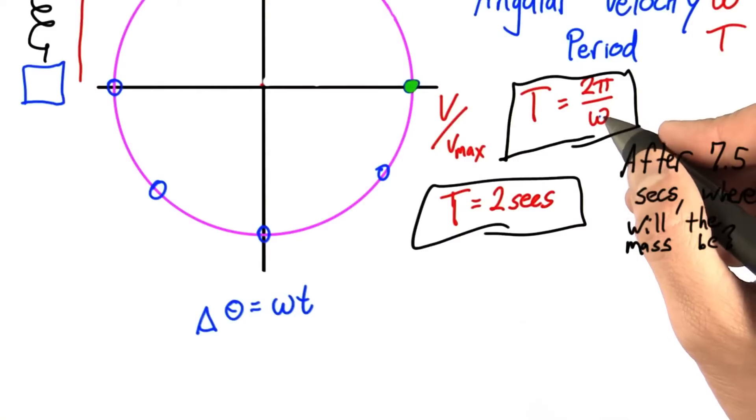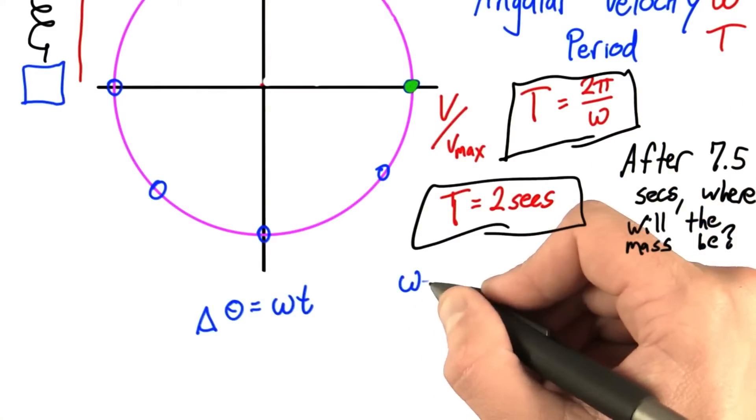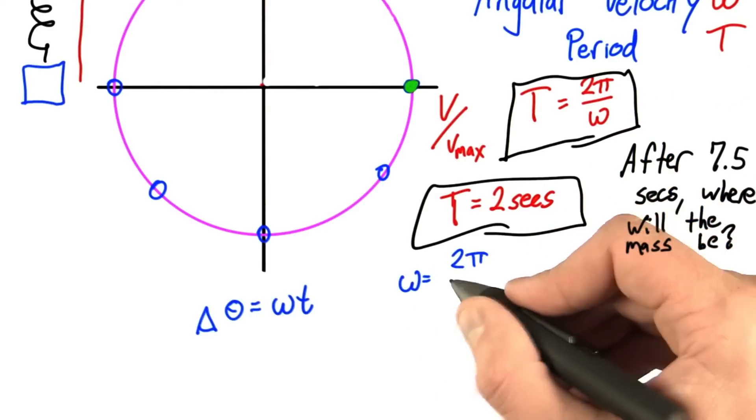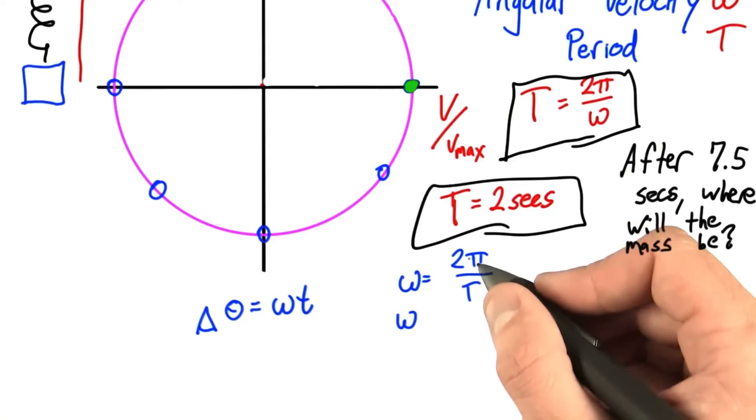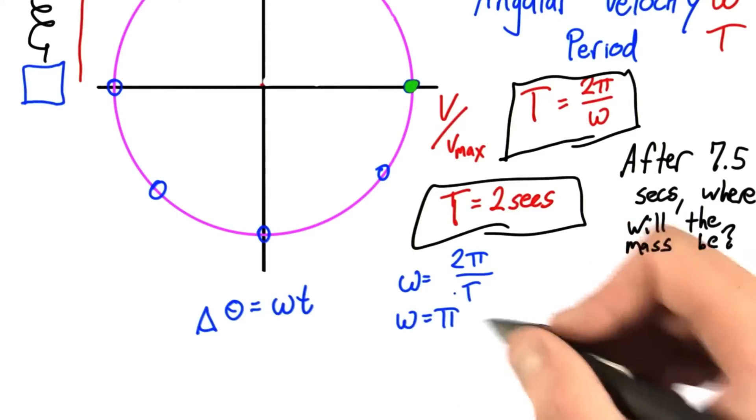We have this relationship: T equals 2π over omega. Or rearranged, omega equals 2π over T. So in this case, with a T of 2, omega is equal to π radians per second.